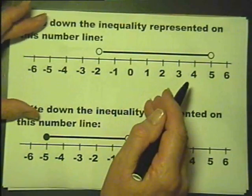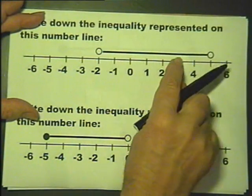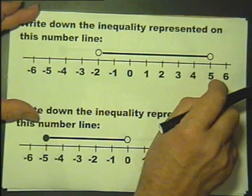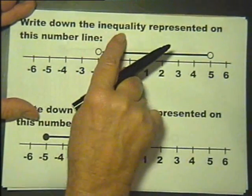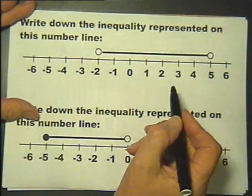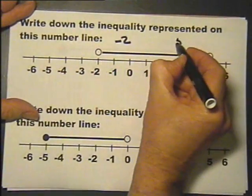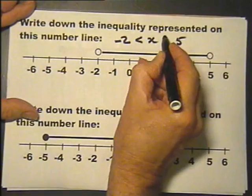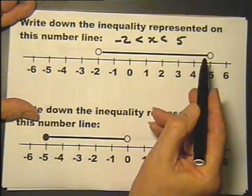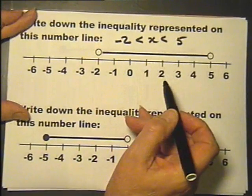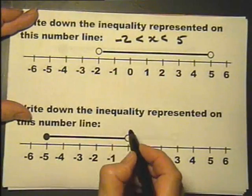Moving on to questions where the diagram has been drawn and we have to write down the inequality represented on this number line. So it goes from minus 2 to 5, so that's the first bit: it's between minus 2 and 5, doesn't include either. Finished.